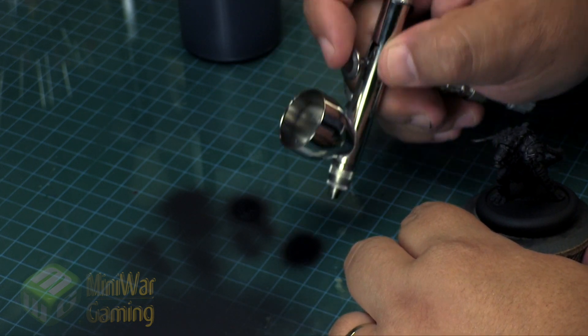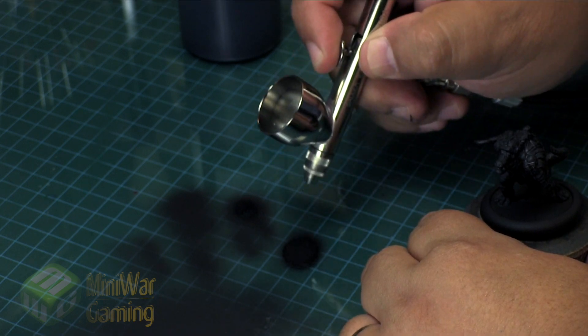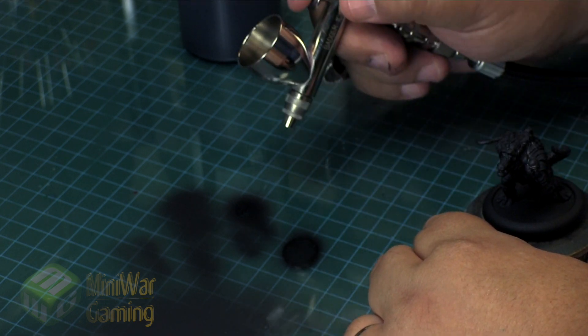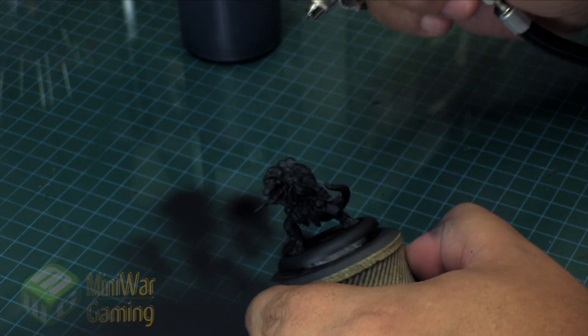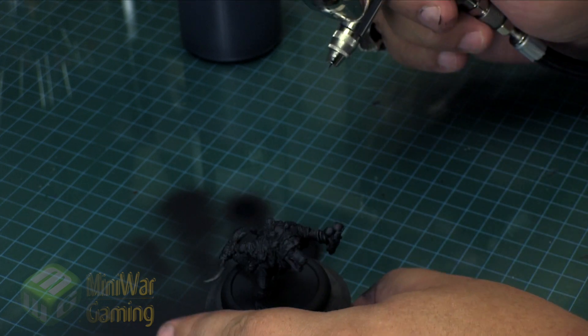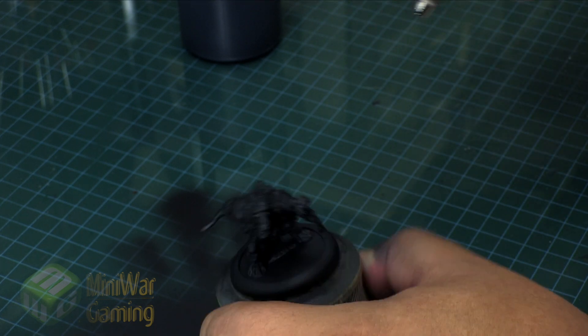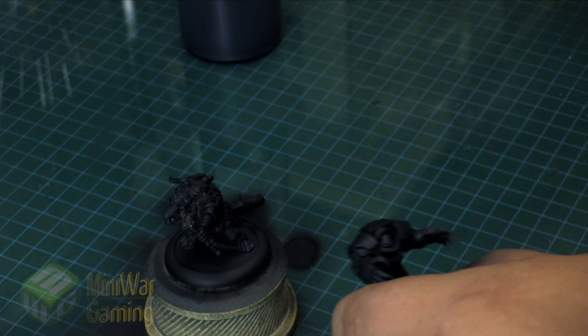You always want to just build the color up with the primer. Oftentimes when you're just working the model back and forth and just working around once from the top, get the underside, and you're pretty much done. But that's it - that's priming with the airbrush using black primer.